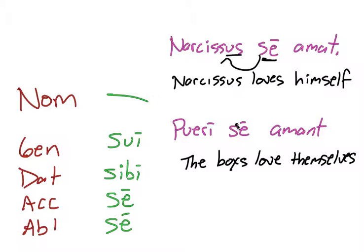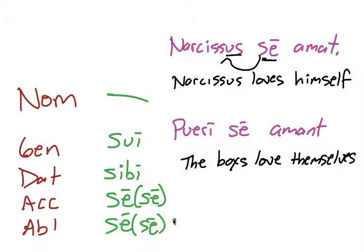Remember, the forms are the same for the singular and the plural. Also, one thing that's important to know is that sometimes there's an extra se added — so the ablative can be sese. That happens in poetry and in some prose, and it's just a more emphatic, intensive way of saying it, but it doesn't change the meaning.